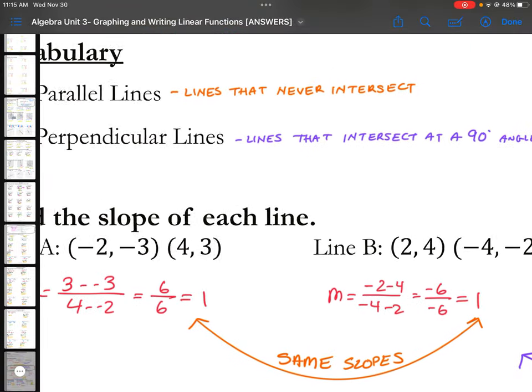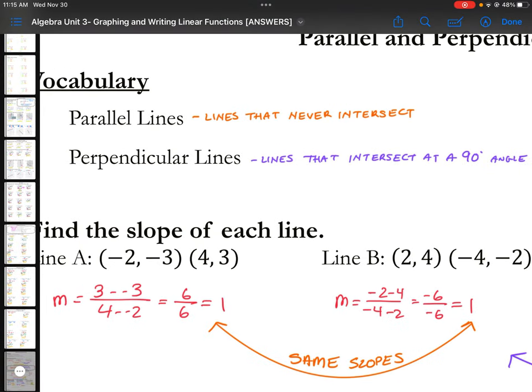Because they're the same slope, you're going to be able to say that these two are parallel to each other. If they have the same slope, think about it. On the graph, they're never going to cross.